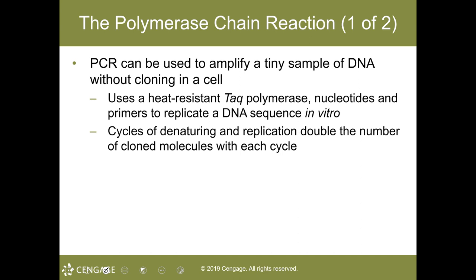The first cycle generates two double-stranded molecules, the second cycle generates four, and the third cycle generates eight — the number of DNA molecules doubles each cycle. After 20 heating and cooling cycles, the process yields 2 to the 20th power, or more than one million copies of that target sequence. Researchers use a heat-resistant DNA polymerase known as Taq polymerase, along with nucleotides and primers, to replicate DNA in vitro.